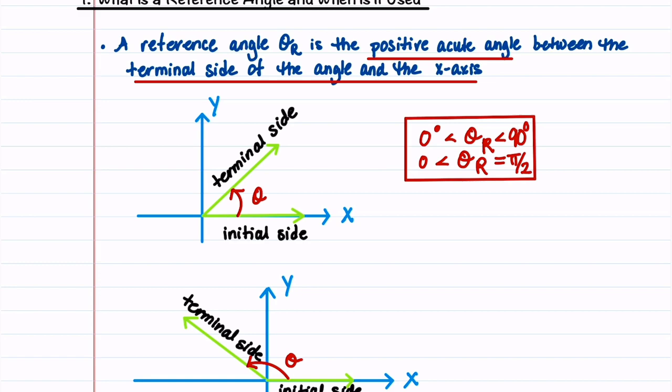In our first diagram, theta is a positive acute angle, so our reference angle is equal to theta. In our second diagram, theta is a positive obtuse angle, so our reference angle is not equal to it. Our reference angle needs to be a positive acute angle between the terminal side of the angle and the x-axis. In our diagram, that puts theta sub r right here — it's the positive acute angle between the terminal side and the x-axis.